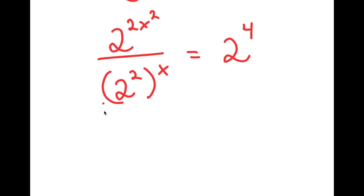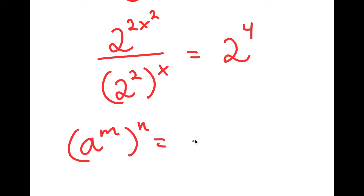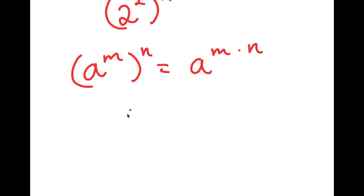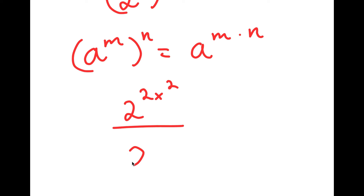To simplify this, I'm going to use the property: a to the power of m to the power of n is equal to a to the power of m times n. So I can rewrite 2 squared to the power of x as 2 to the power of 2 times x, which is the same thing as 2 to the power of 2x. And this is equal to 2 to the power of 4.